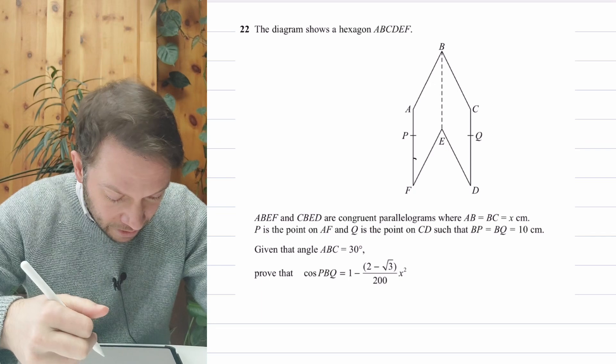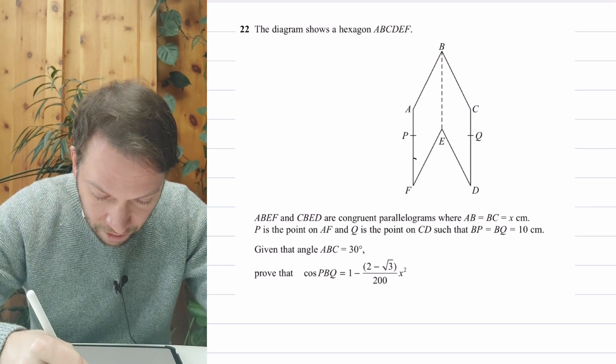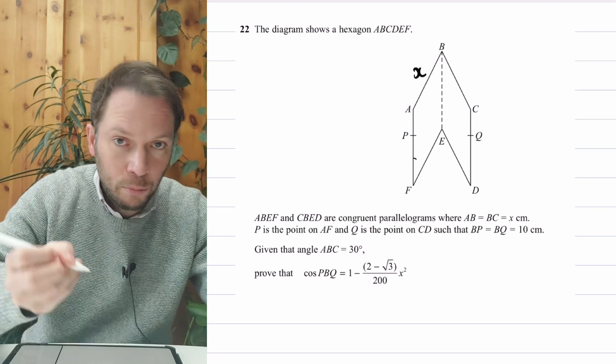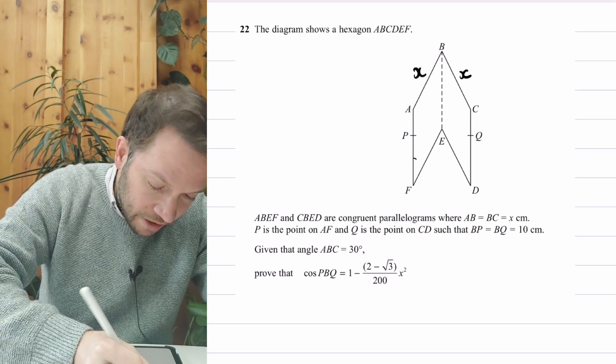And we're given that AB is equal to BC is X. So in fact, I'm going to just put that in quick. So the length of AB is X. I'm not going to worry about the unit for the moment. And BC is X.